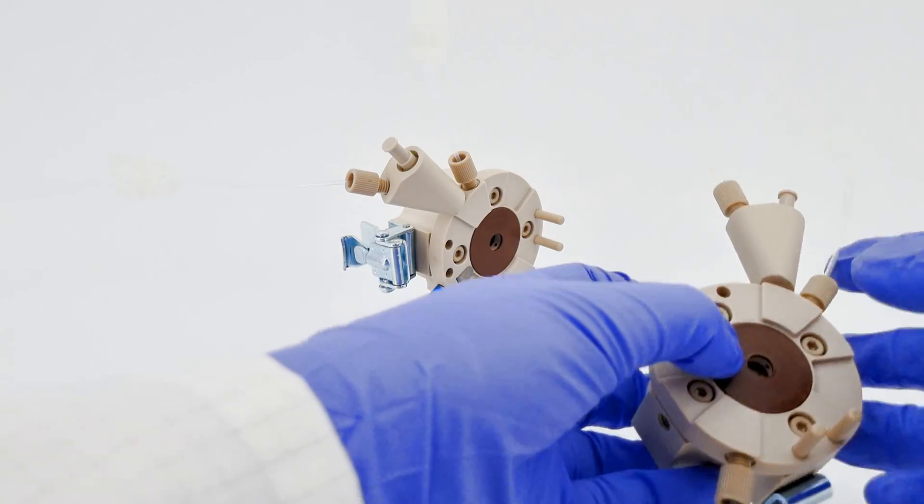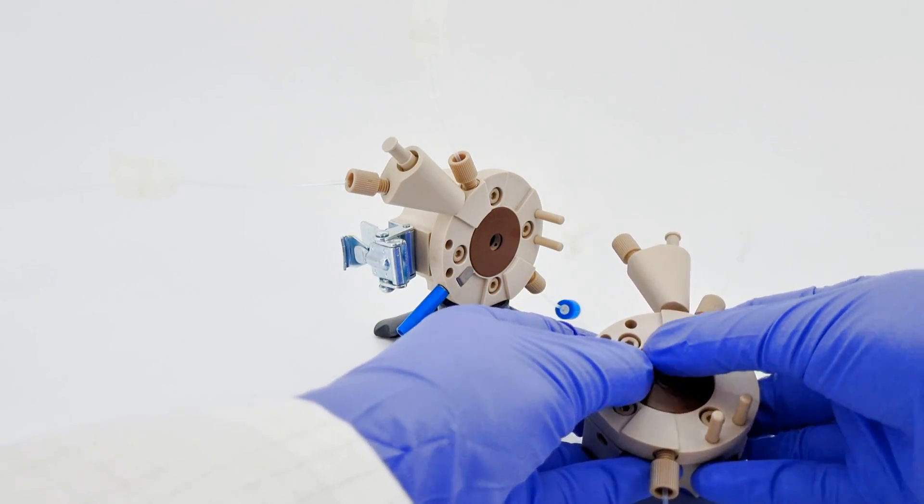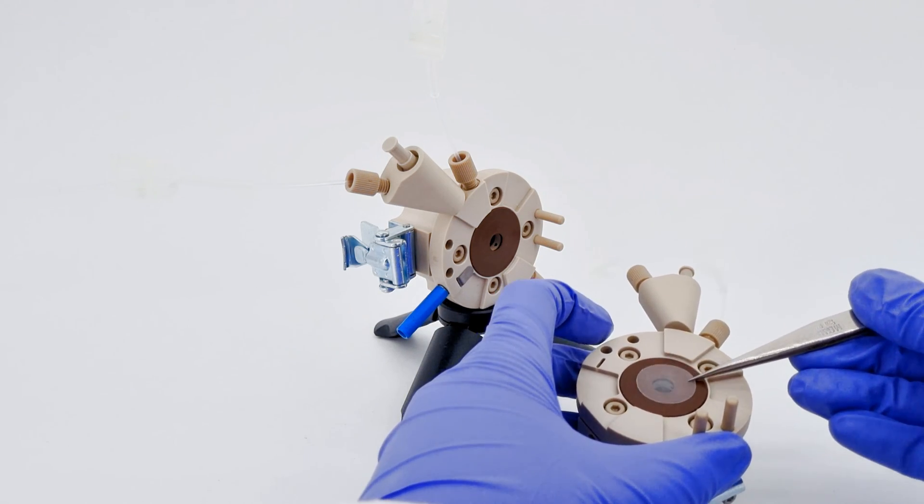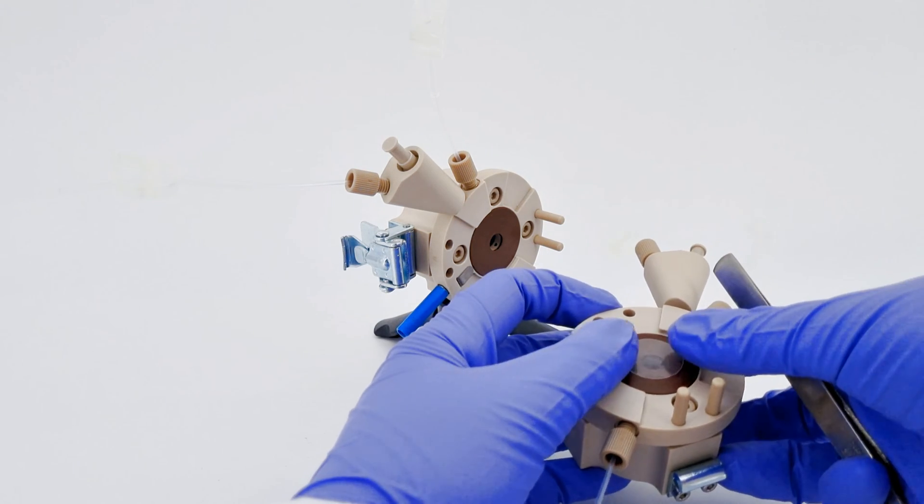Now, depending on the experiment you're running, you'll place either your metal alloy or a permeable membrane onto one of these gaskets. Gently apply pressure to make sure it adheres properly.